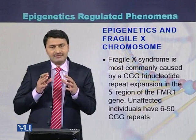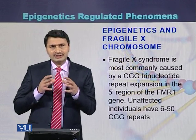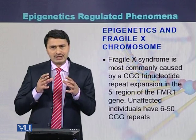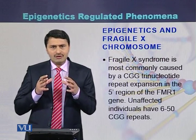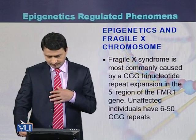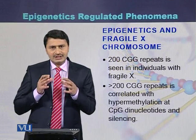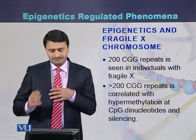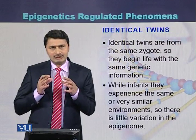Epigenetics and Fragile X syndrome. Fragile X syndrome is a disease found in humans caused by trinucleotide repeats. Normal individuals have 20 to 50 repeats of the trinucleotide CGG, while affected individuals have more than 200 repeats. It has been observed that more than 200 trinucleotide repeats are usually methylated.